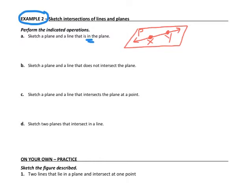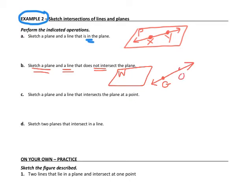Next, I have to sketch a plane and a line that does not intersect the plane — so it's got to be two separate drawings. I'm going to make my plane and name it plane W. Just a letter in the corner is how we name the plane — no dot next to it because it's not naming a point. Then I draw a line that does not intersect the plane, and I'm going to name mine line GO. Make sure you have arrows on the end and capital letters to name the points.